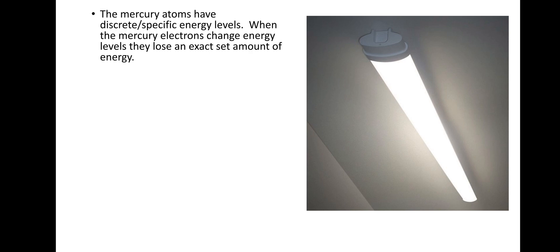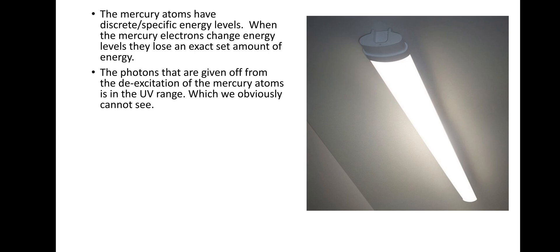The mercury atoms have discrete or specific energy levels. When the mercury electrons change energy levels, they lose an exact set amount of energy. So that's after they've been excited, they've got to drop back down. And when they drop back down, they lose a definitive or discrete amount of energy as they move between energy levels. The photons that are given off from the de-excitation of the mercury atoms' electrons is in the UV range, which we obviously can't see.